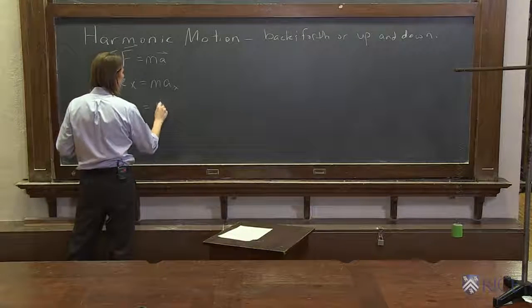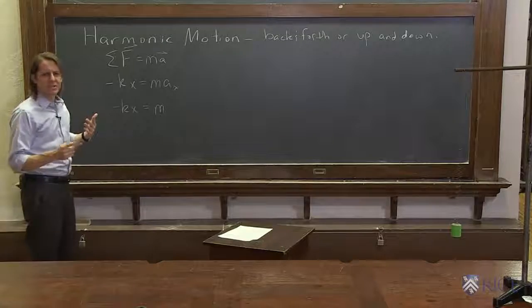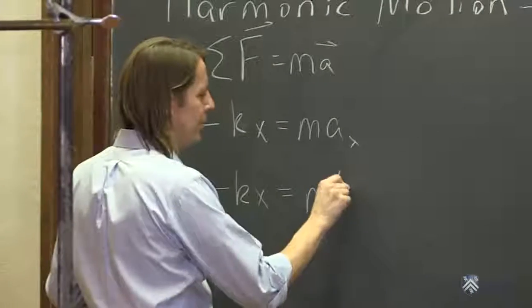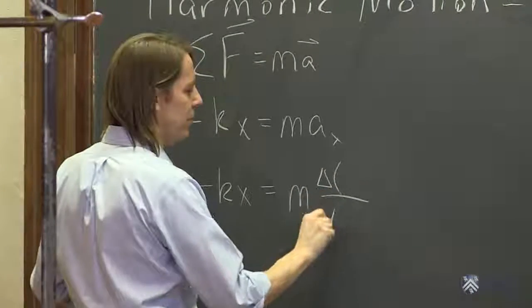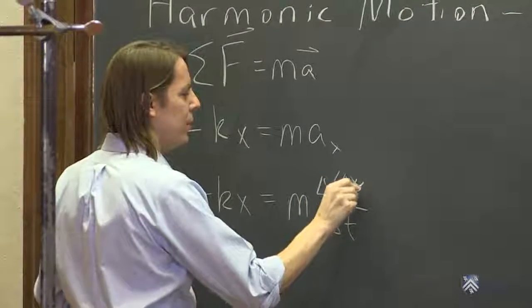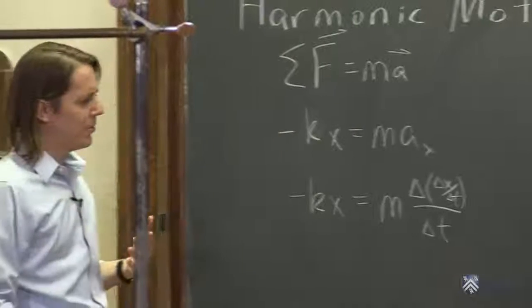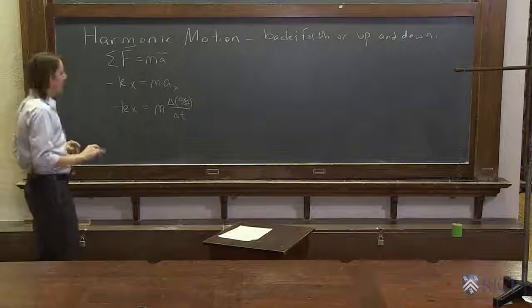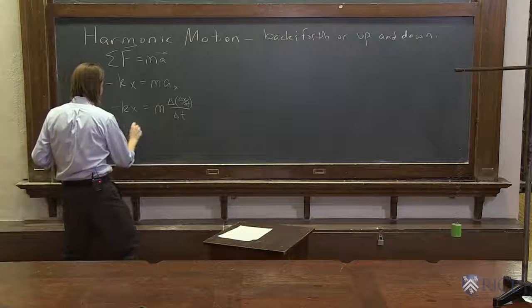We can make an attempt at it. We could say -kx = m times acceleration, and acceleration is the change in velocity with respect to time: Δv/Δt. But Δv is Δx/Δt, so you can make some mess like this. We don't want to deal with this. This is a differential equation.